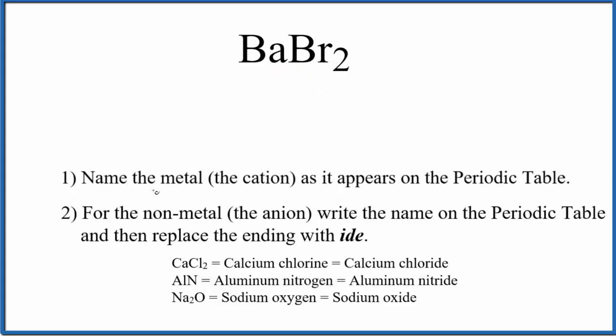First, we name the metal — that's the cation, the positive ion — as it appears on the periodic table. BA, that's barium.